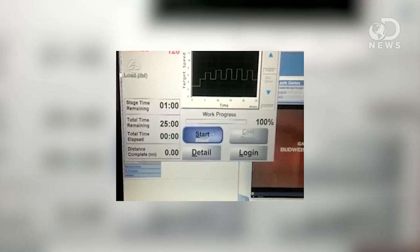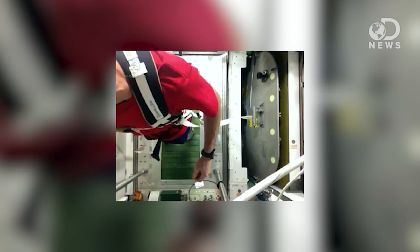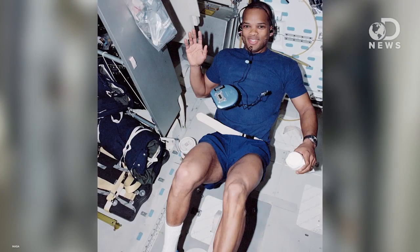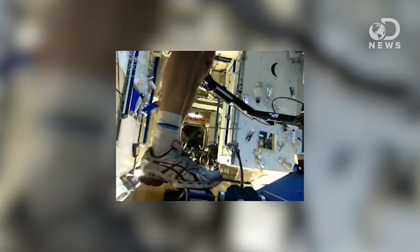To combat these problems, astronauts are required to exercise two and a half hours a day using a special treadmill, resistance bands and a cycle ergonometer. Even with rigorous exercise, astronauts still lose about half to one percent of their bone density per month spent in space. To further fight the loss, they take vitamins and medication prescribed normally for postmenopausal women.